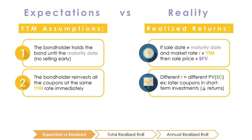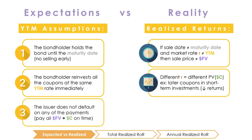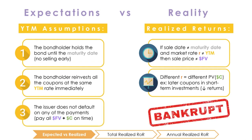This assumption is implicit in the annuity part of the bond valuation formula. By discounting all of our coupons to their present values using the market rate of interest on the bond, we're assuming that we would be indifferent between receiving the present value of the coupon today and receiving the future value later. The third assumption is that the bond issuer doesn't default on any of their payments — that is, you receive the full amount of coupons and principal that was promised. But these three assumptions don't always hold in reality, so your realized return may differ from your expected return.